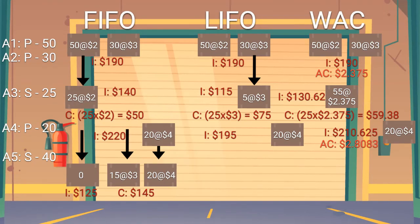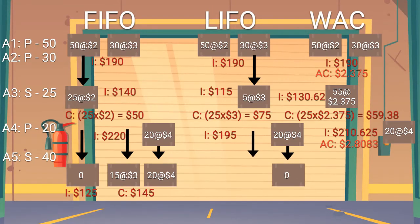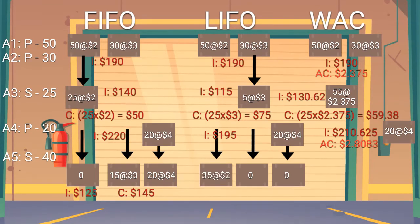Let's compare that to LIFO. Under this method, the 40 lemons are used by the last in first — which are all 20 of the $4 lemons, all 5 of the remaining $3 lemons, and 15 of the $2 lemons. So the inventory would just be the remaining 35 $2 lemons, meaning our inventory is $70. That means our costs are $125 for these 40 lemons and a total of $200.